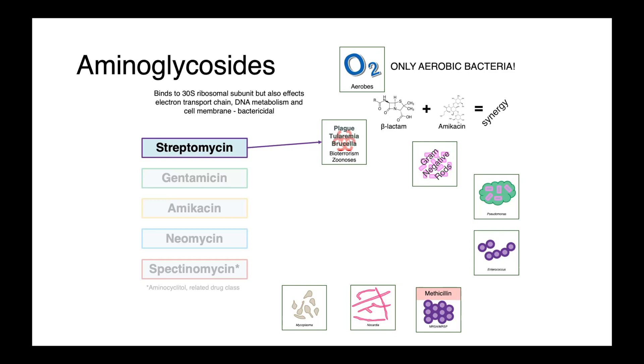Going through these drugs individually, streptomycin is really becoming a historical compound. Its uses range from bioterrorism agents to nasty zoonoses, things like plague or Yersinia pestis, Francisella tularensis, and brucella in people.